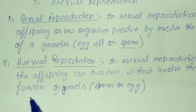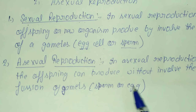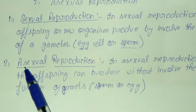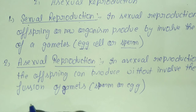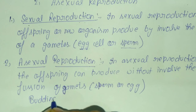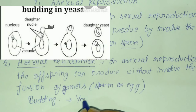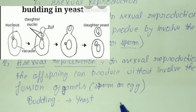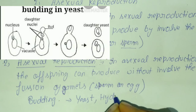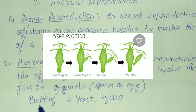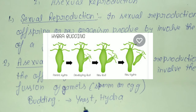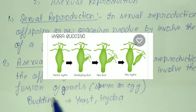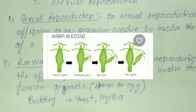In asexual reproduction, the male body has no involvement. There are some examples, such as budding. Budding is used in yeast — from one cell, many cells are produced. The next example is hydra, in which budding reproduction produces new offspring. This is why we call this process asexual reproduction.